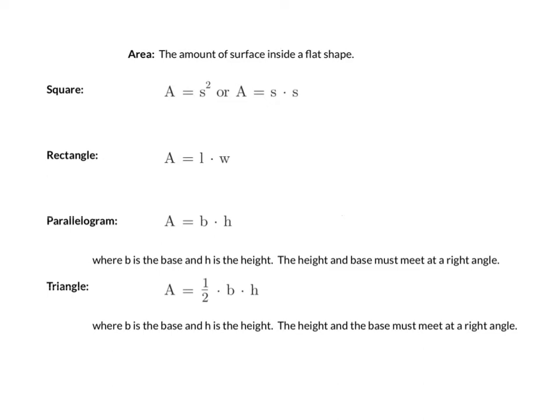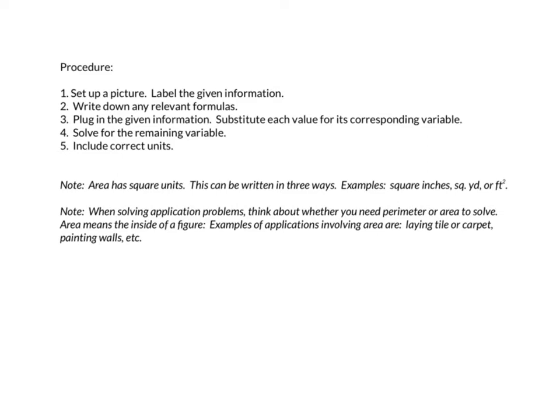Just like when we talked about perimeter, our procedure when working with area is the same: set up a picture and label the given information, write down relevant formulas, plug in the given information by substituting each value for its corresponding variable, then solve for the remaining variable and include correct units. One thing to note: area has square units. This can be written in three ways — in words such as square inches, abbreviated such as square yards, or using exponents such as feet squared.